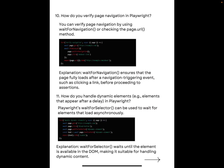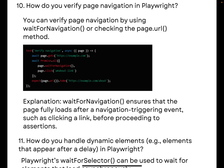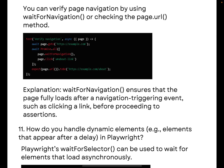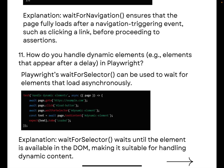The next question is: how do you verify navigation in Playwright? This is a very commonly asked question. You can answer it by mentioning two methods: `waitForNavigation()` or checking the `page.url()` method — these two are the most common and most asked in interviews. If questions come from the API context of Playwright, you can expect fewer questions, but from the UI part you will get more and harder questions. Remember these two methods.